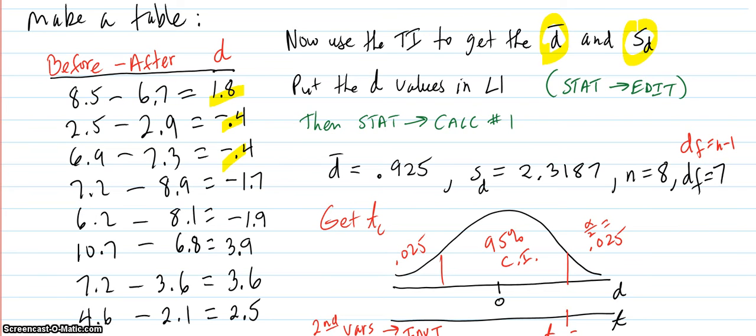So then you put the d values into L1. You go STAT, then edit to get to L1. Then you do STAT again, calculate number one, and you get the information that you need. And for this design the degrees of freedom is n minus one, which is seven.